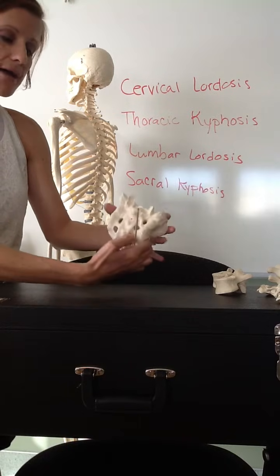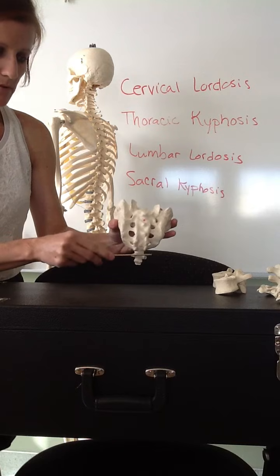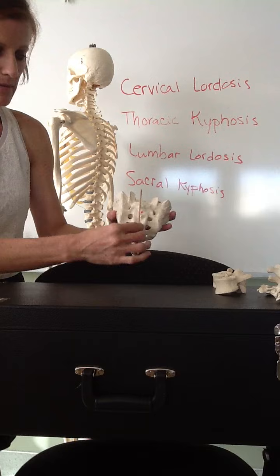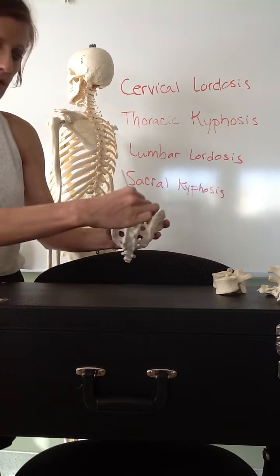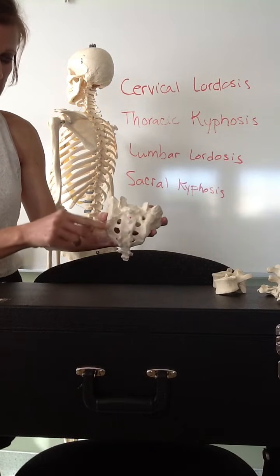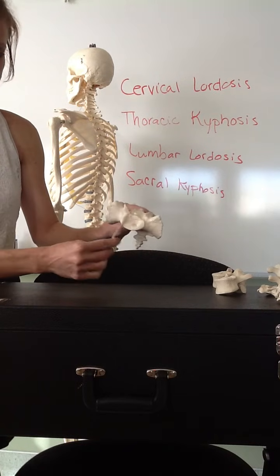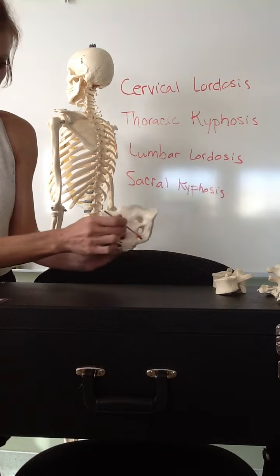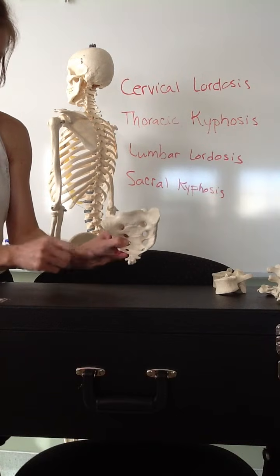On the back of the sacrum, we have ridges called the median sacral crest — median because it's in the middle, sacral because it's on the sacrum, and a crest is a raised swelling. Key structures of the sacrum include: the articular processes, the base, the promontory, the sacral foramina, the median sacral crest, and at the very bottom, the coccyx.